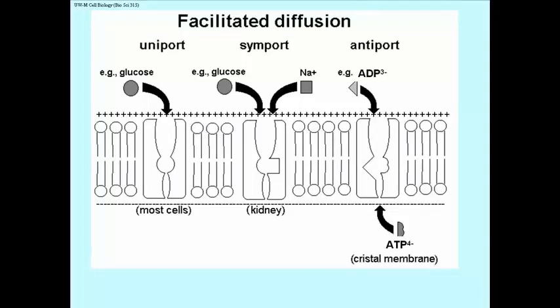And then antiport, which we've actually seen in the cristal membrane of the mitochondrion. We exchange ADP with 3 negative charges for ATP with 4 negative charges. So the ATP leaves the matrix of the mitochondrion while ADP enters it. And you can see, if you remember perhaps, that this happens in part because there is a potential difference across the membrane. There is a positive charge on the outside of the cristal membrane and a negative charge on the matrix side of the cristal membrane.